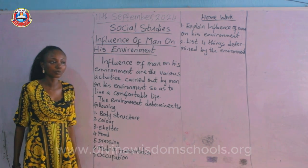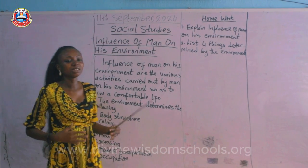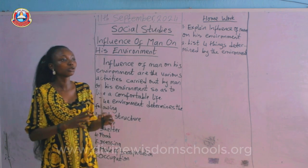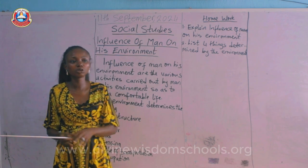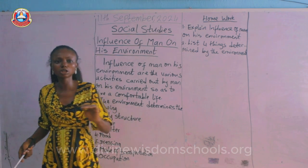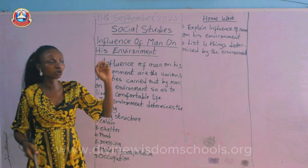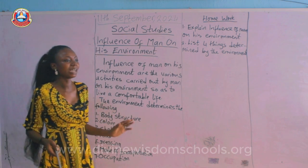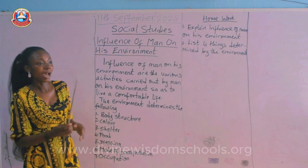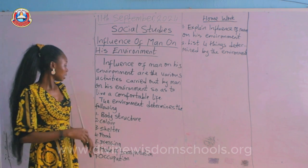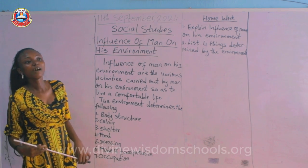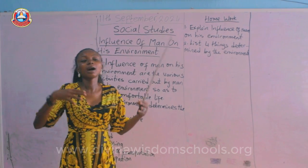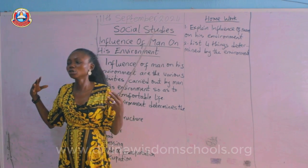So back to what the environment determines: first, body structure. The environment determines your body structure. In some environments, you see that people are very short — you hardly see tall people there. The environment determines their height, their stature, and so on.